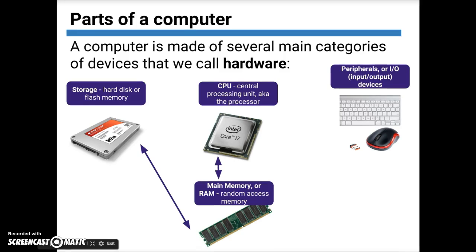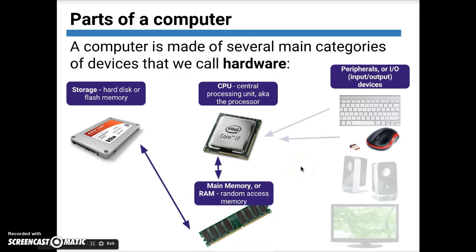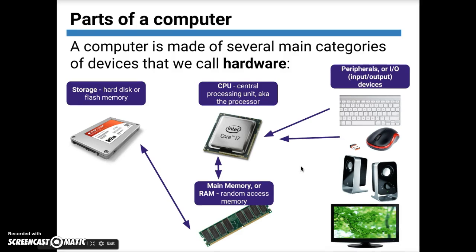So how do we actually play the song or get the information that we need to play the song? Computers have what we call peripherals — peripheral just means to the side. We're also going to call them I/O devices, input and output devices, because they give the computer information or let the computer output information. The keyboard and the mouse are strictly input devices because they give the computer information but don't take information back from the computer.